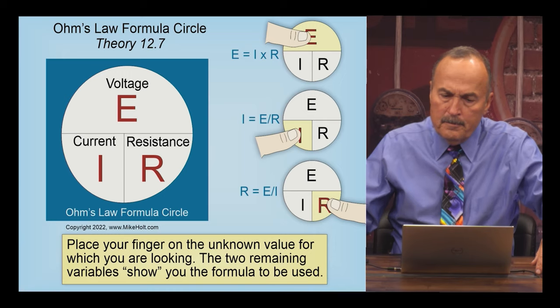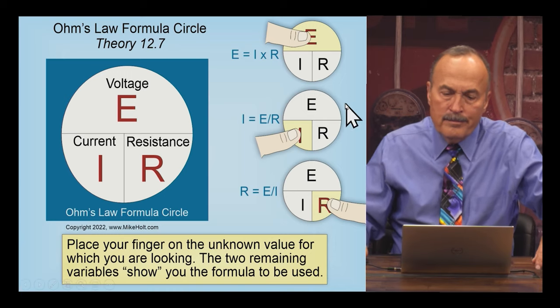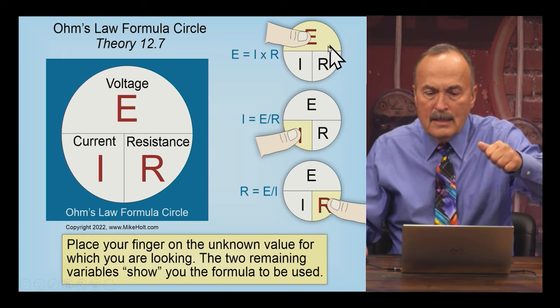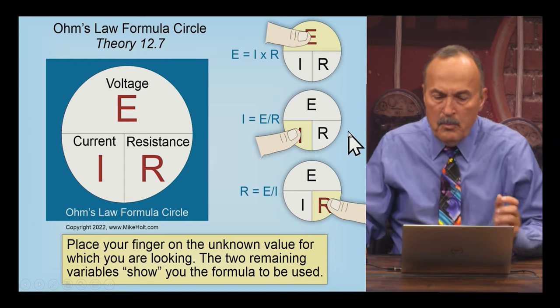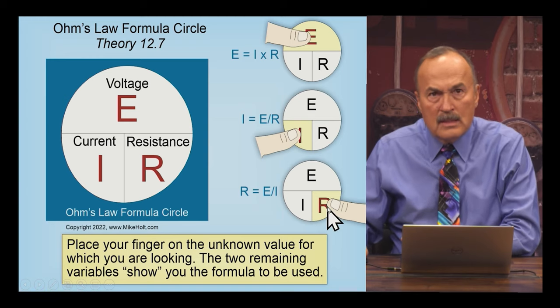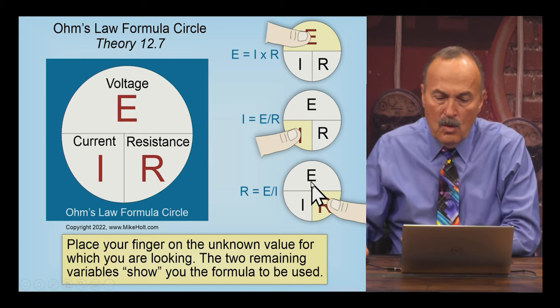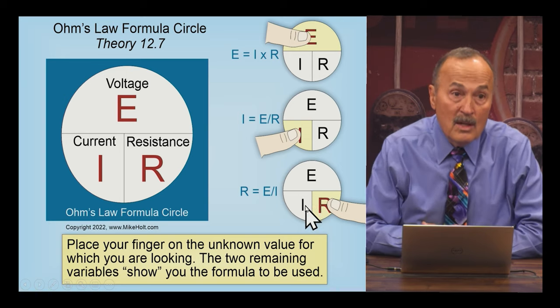So back over here, you put your finger over the E's, I times R. Put your finger over the I because you're looking for intensity, it's E over R. Put your finger over the R because you're looking for resistance, well then it's going to be E over I. But you need to know what E is, you need to know what I, you need to know what the question is.